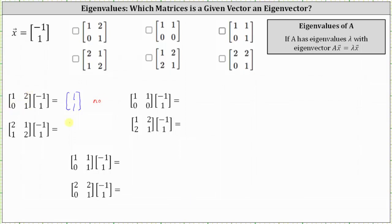Looking at the next product, the first entry is 2 times negative 1 plus 1 times 1, which is negative 1. And the second entry is 1 times negative 1 plus 2 times 1, which is 1. Notice in this case, the product is equal to the given vector (-1, 1). Or we can say the given matrix times the vector (-1, 1) is equal to 1 times the vector (-1, 1), which indicates lambda — the eigenvalue — is equal to 1 for the given matrix.